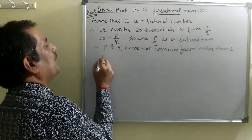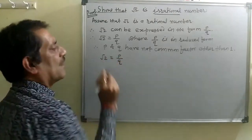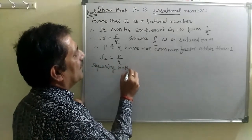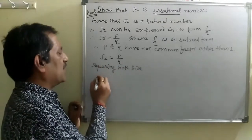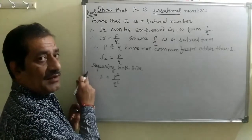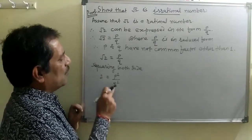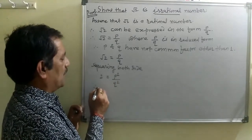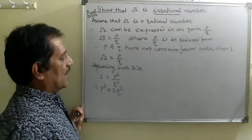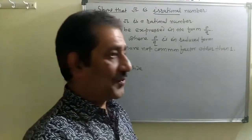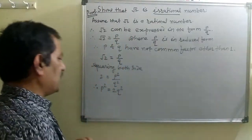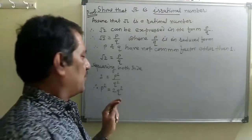Therefore, root 2 is equal to P upon Q. Squaring both sides, we get 2 equal to P squared upon Q squared.